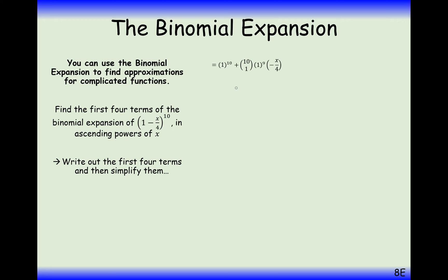Add 10 choose 1, decrease the power on the 1, increase the power on the negative x over 4. And decrease the powers on the 1, increase the chooses and increase the powers on x over 4, or minus x over 4.